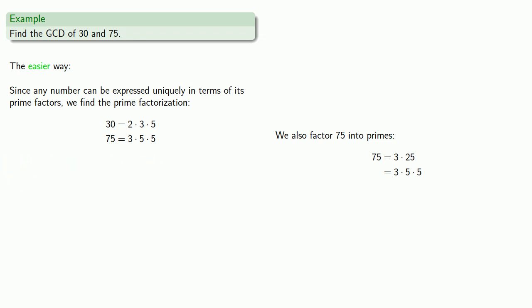And so what we look for is the largest recipe that we can make in both of these factorizations. And here we see that both numbers have a 3, and both numbers have a 5. So this product, 3 times 5, will be a factor of both numbers. And we can't include any other prime factors, because if we include the 2, it won't be in the 75. And if we include the other 5, it won't be in the 30.